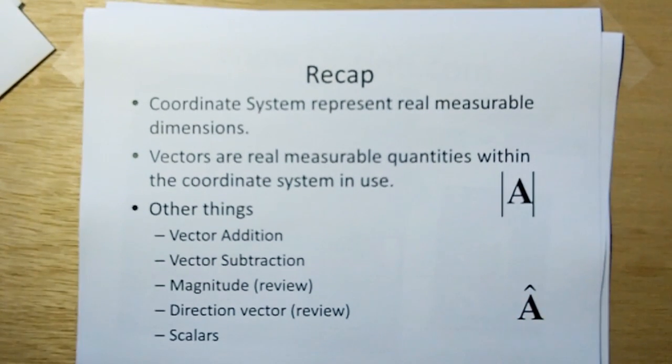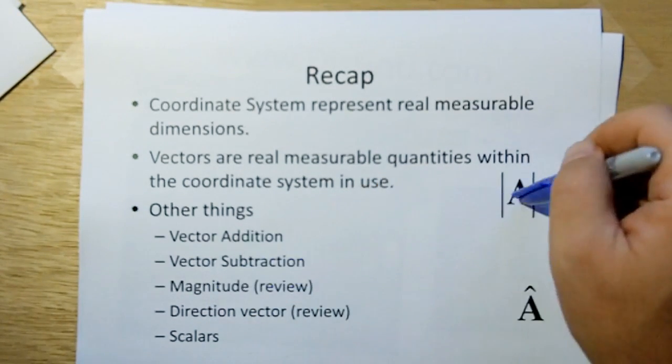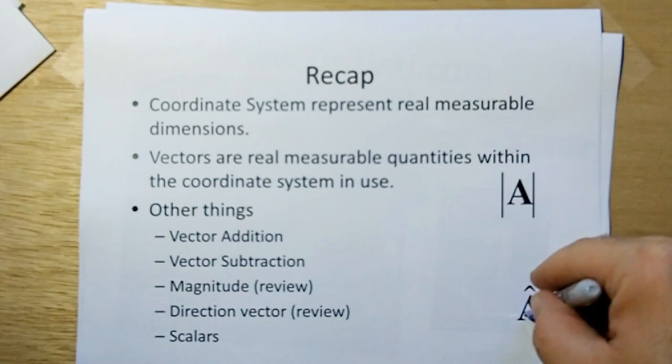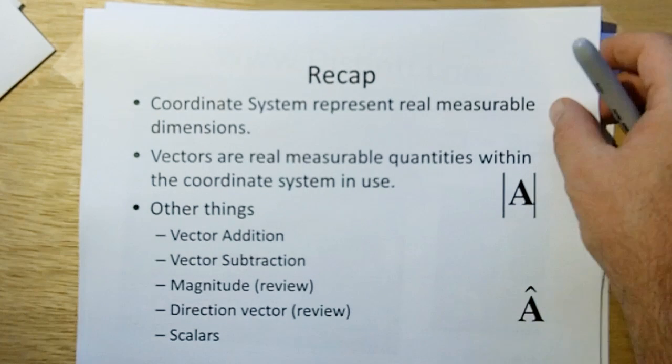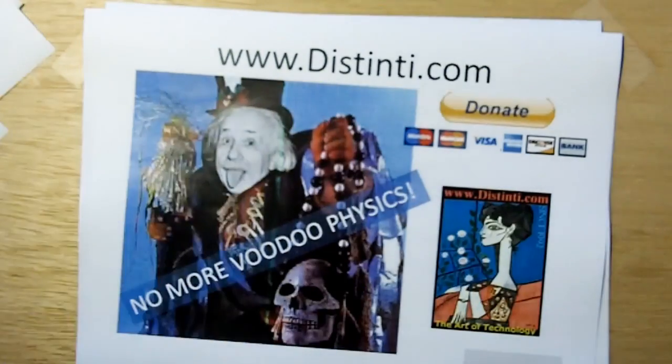So recap. We defined that coordinate systems represent real measurable dimensions, and vectors are real measurable quantities within the coordinate system in use. We talked about vector addition, vector subtraction, the magnitude of a vector, and the direction of a vector or the unit of a vector. We also discussed scalars. This ends the section on the definitions of vectors. As we start getting more into the course, we're going to start showing you more and more of what Q vectors are all about. And Q vectors will add another dimension to 3 space to allow multiplication and division to work properly. And we're going to get into all that, so don't worry about it if you don't understand that now. Thank you very much.